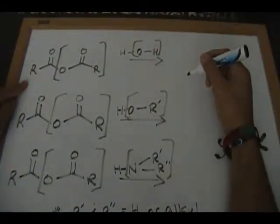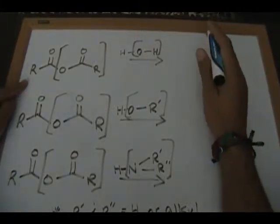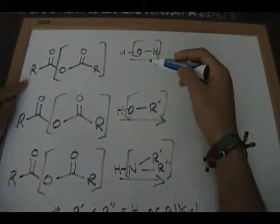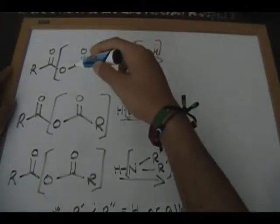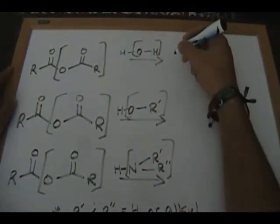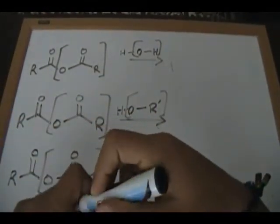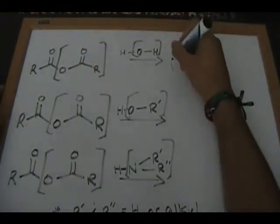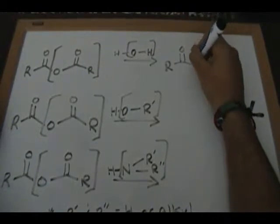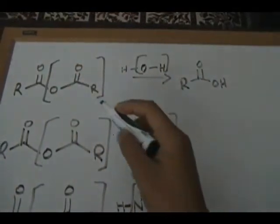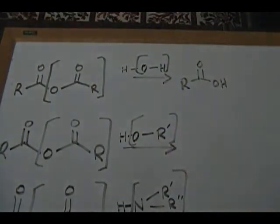The first reaction: a symmetrical anhydride reacting with water. The OH of the water is going to replace this leaving group piece here. What you end up generating is a carboxylic acid — let me zoom in on the top section so you guys can see it. You generate that carboxylic acid due to the OH replacing this piece, and this other piece will also become a carboxylic acid.